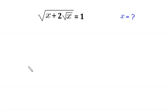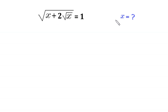Hello, welcome to how to solve this very nice radical equation: square root of x plus 2 times square root of x is equal to 1. We need to find all possible values of x.